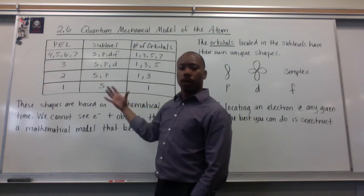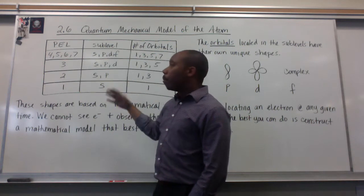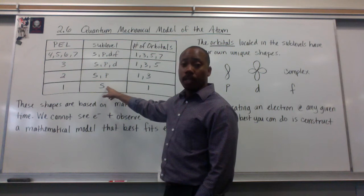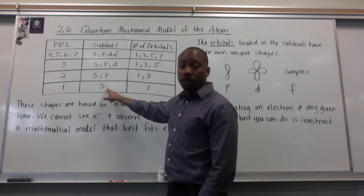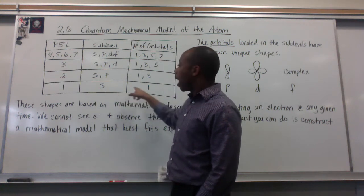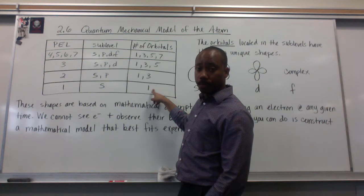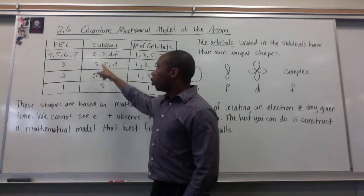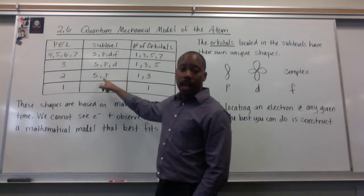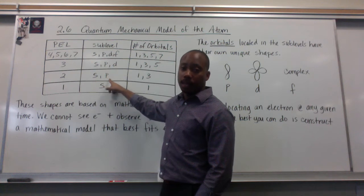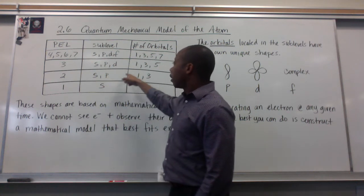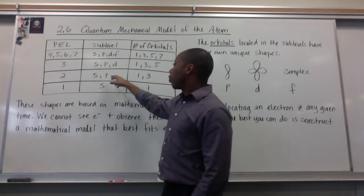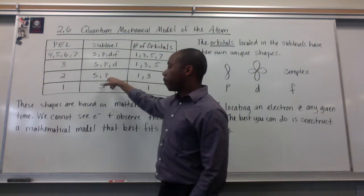We'll talk about what an orbital is in just a moment. For my first energy level, I have one sub-level, and it's sub-level S. Sub-level S has one orbital. In my second energy level, I have two sub-levels — sub-level S and sub-level P. I have one orbital for sub-level S and three orbitals for sub-level P.